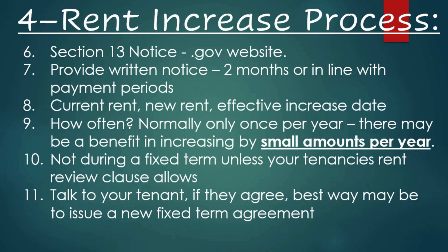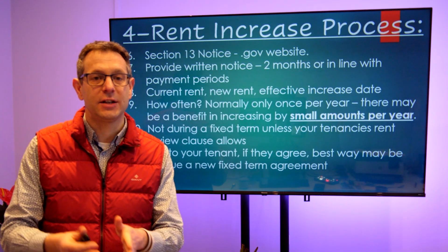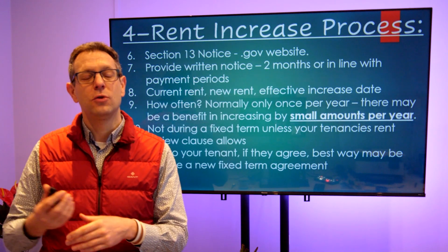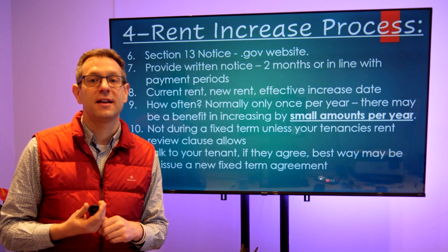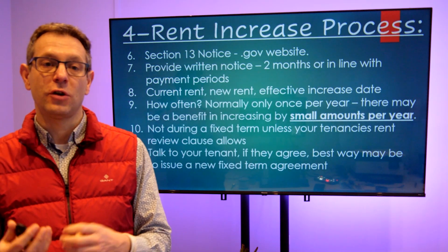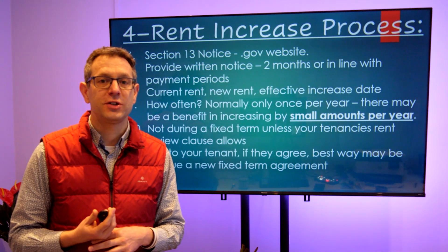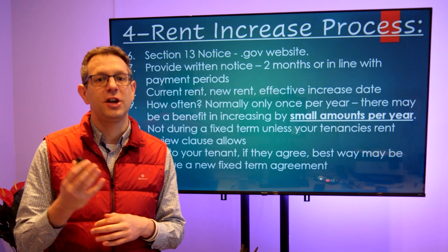A couple more points: you can get the notice from the gov.uk website. It must be written notice given two months in advance, or in line with the payment period — so if your tenant pays quarterly, it must align with those periods. It must state the current rent, new rent, and effective date. You can normally only increase it once a year. We recommend reviewing rents every year — a small increase per year is appropriate. You can't issue a rent increase during a fixed term unless the rent review clause allows it. If your tenant agrees, the best approach may be to issue a new fixed term agreement.